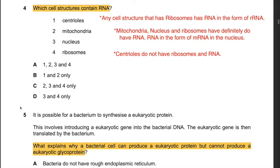Question 4: Which cell structures contain RNA? The options are centrioles, mitochondria, nucleus, and ribosomes. Any cell structure that has ribosomes has RNA in the form of rRNA. Mitochondria has ribosomes, hence has ribosomal RNA. The nucleus has RNA in the form of mRNA, formed during transcription. Ribosomes definitely have ribosomal RNA. Centrioles do not have ribosomes or RNA. Hence the answer is C: 2, 3, and 4 only.